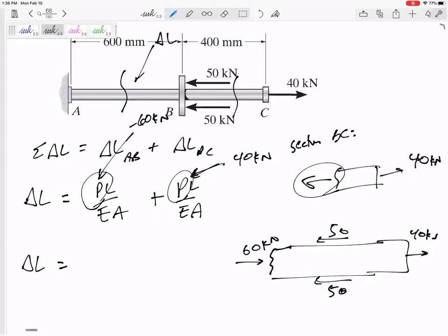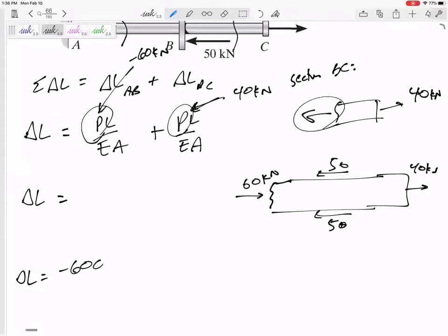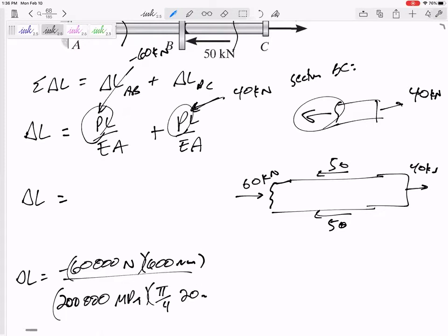Now I'm probably not going to do kilonewtons. I prefer newtons. So now the PL over EA. Let me get some more room right here. Negative 60, I'm going to do 60,000 newtons. The length of that section, 600 millimeters, over the E, 200. I'd change it to 200,000 so that I could do MPa. And the area, pi by 4, 20 squared.